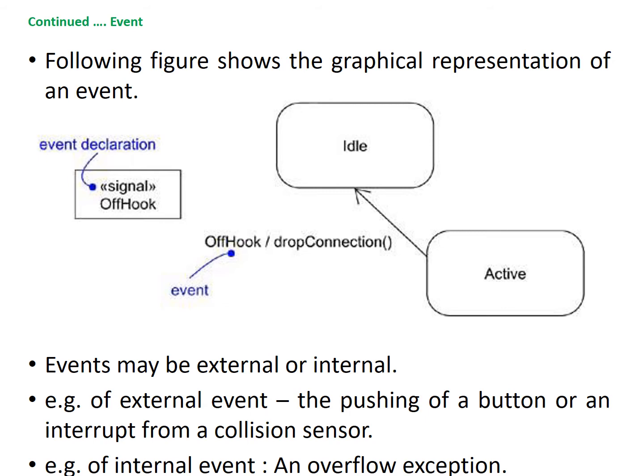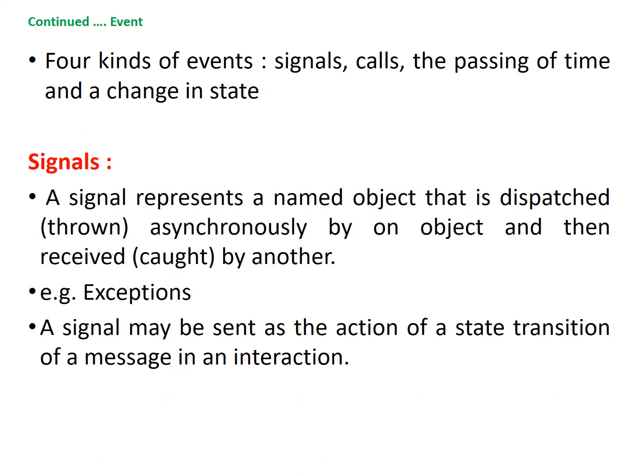This event changes the state from active to idle. Events may be external or internal. External events are those that pass between the system and its actors — for example, the pushing of a button or an interrupt from a collision sensor. Internal events are those that pass among the objects that live inside the system. An overflow exception is an example of an internal event. In UML, you can model four kinds of events: signals, calls, the passing of time, and a change in state.